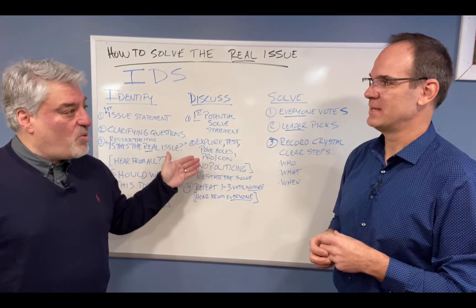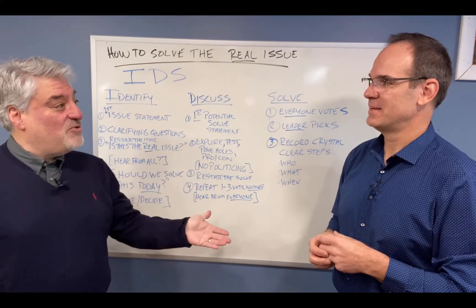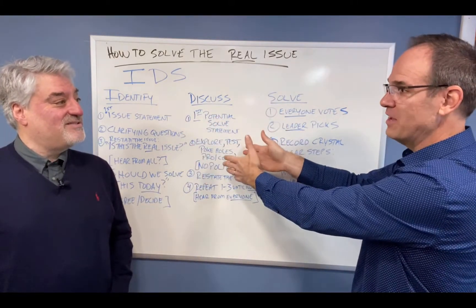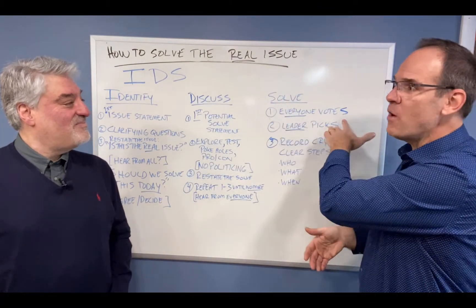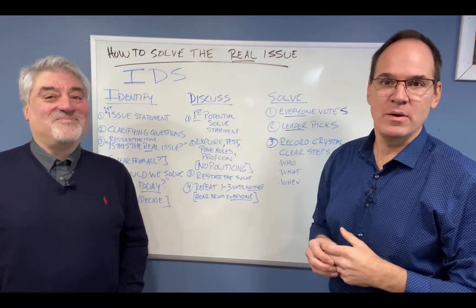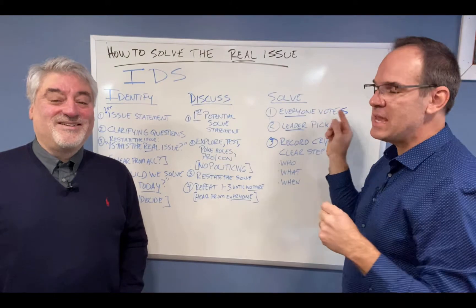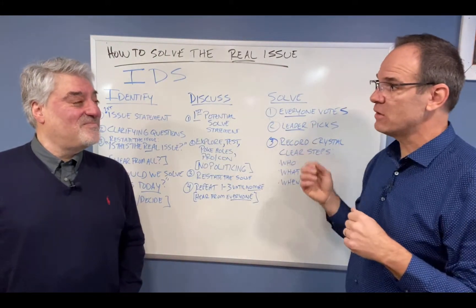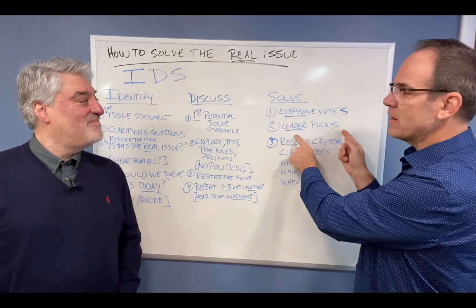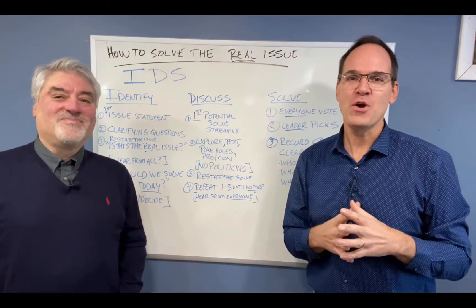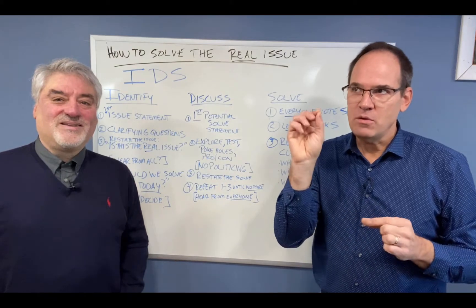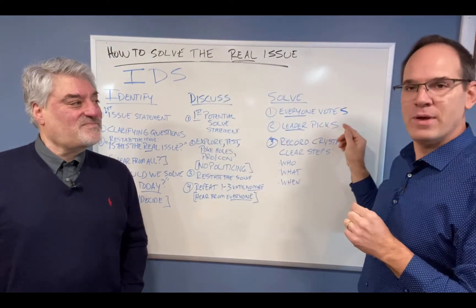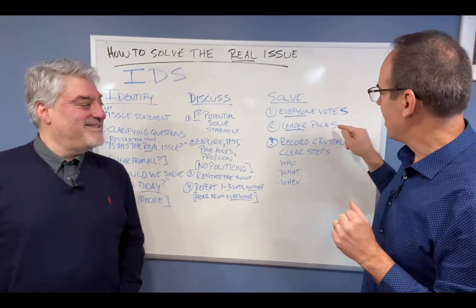So we've gone through all of the various options. You've identified, you've discussed all the potential solves, and now we've got to vote — everyone votes. The key there is not kumbaya that everybody gets an equal vote per se. There's still a leader of the room, and the leader gets to pick. The leader's heard from everyone. As long as you've heard from everyone and really nailed down what the issues and the solves could potentially be, they'll be okay. Trust us on this one — the leader will pick.